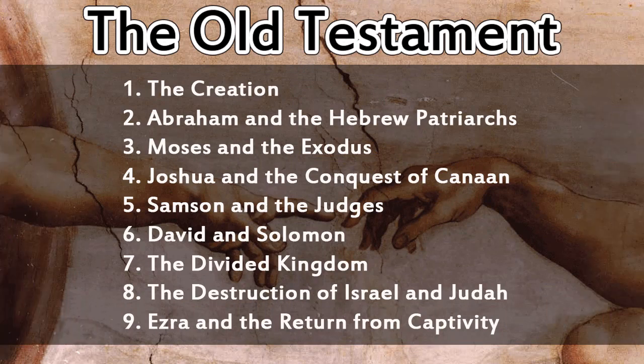The Old Testament can be summarized by nine main historical periods: the creation, Abraham and the Hebrew patriarchs, Moses and the Exodus, Joshua and the conquest of Canaan, Samson and the Judges, David and Solomon, the divided kingdom, the destruction of Israel and Judah, and Ezra and the return from captivity.